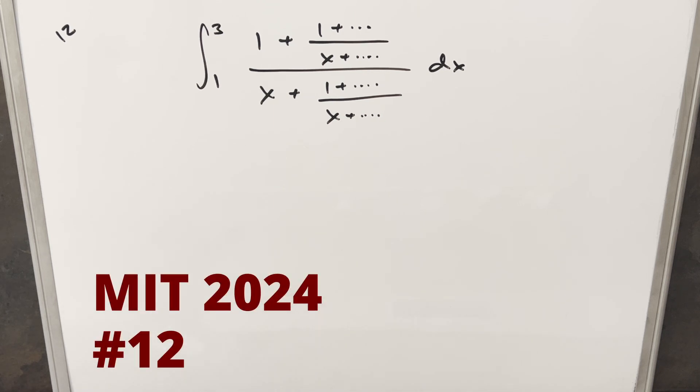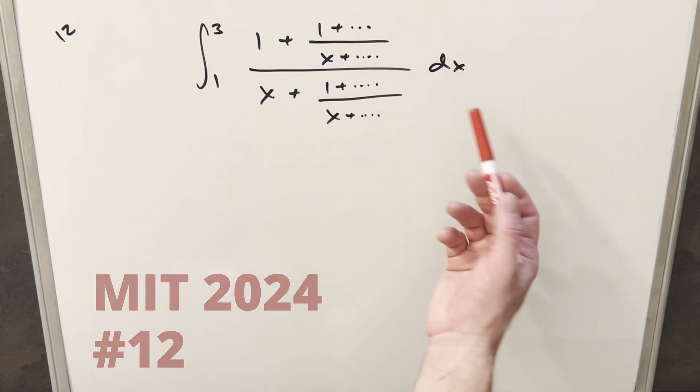Okay, we have here another integral from the MIT Integration B2024, regular season number 12. We have the integral from 1 to 3 of this infinitely repeating expression dx.